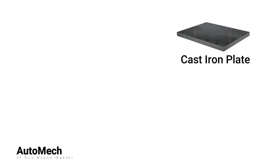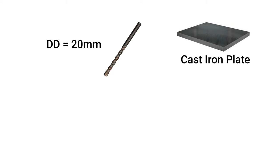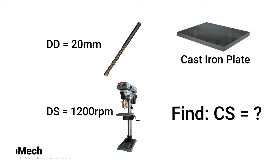We know that the workpiece is a cast iron plate. Since the diameter of the hole needed to be created is 20mm, that basically means that will be the size of the drill bit used on the workpiece. Meaning, drill diameter or DD is equal to 20mm. Another factor that we know is that the drill press is currently producing a speed of 1200 revolutions per minute, meaning drill speed or DS is equal to 1200 RPM. Now that we have identified the DD and DS, we can now solve for the CS or cutting speed using our formula.